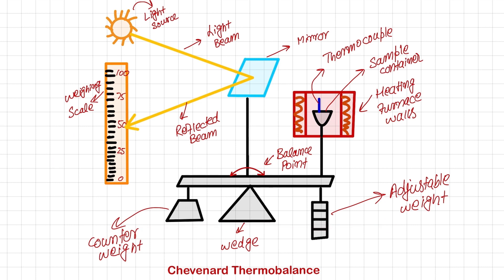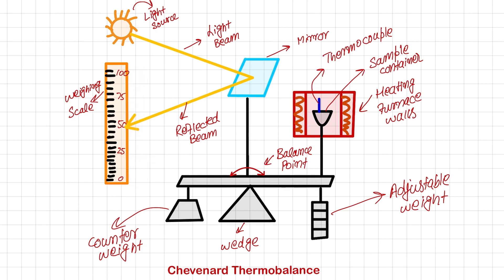This whole assembly was placed on a static table. It was open and very delicate — there was no closed container, so air currents and vibrations of the earth affected it. However, the achievement of this instrument is that it was a very basic instrument and the start of thermal methods of analysis. On the scale, the weight starts at 100 percent at the top and decreases to zero percent downward.